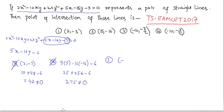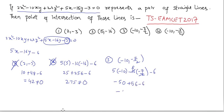Third option is (-10, -7/2): 5×(-10) - 16×(-7/2) - 6 = -50 + 56 - 6 = 0. So the third option is correct. The point of intersection is (-10, -7/2).